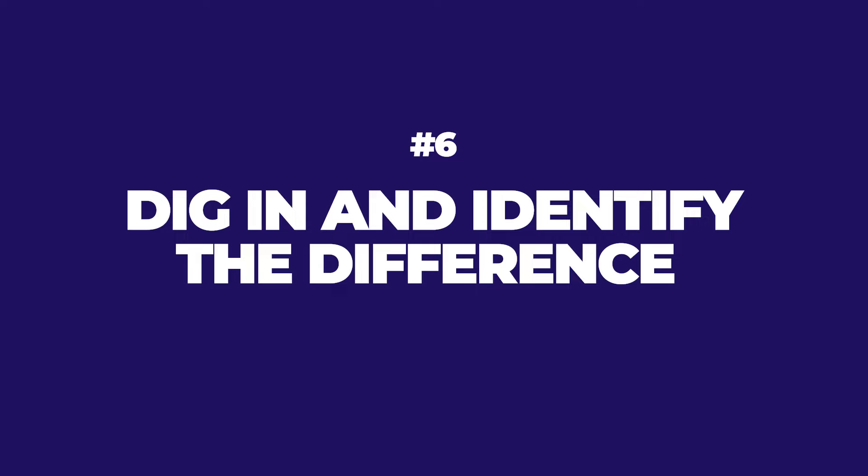Number six: once you do the scoring, if you see inconsistencies or variances, dig in and make sure you've properly identified the difference or delta between the scoring. Question your assumptions, make sure you have the correct story being told bid by bid, and that the evaluation criteria as scored is correct.